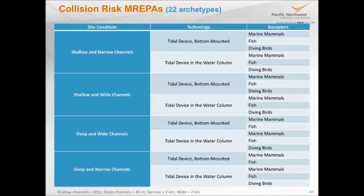We've tried to work through what, for these five stressors, all those archetypes that make sense are. For collision, site conditions are tidal channels that are either shallow and narrow, or wider and deeper. Technologies are likely to be either bottom-based, bottom-mounted, or in the water column. Receptors are marine mammals, fish, diving birds, and potentially sea turtles. We've called shallow channels those less than 40 meters deep, and narrow channels those less than 2 kilometers wide. If you play all this out for collision risks, there'd be 22 archetypes.